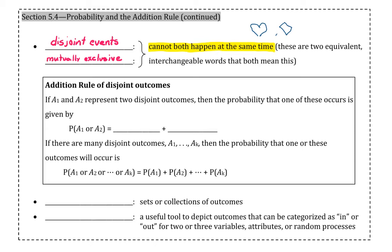When it comes to probability, we will often use the addition rule. For disjoint outcomes, if A1 and A2 represent two disjoint outcomes, then the probability that one of these will occur is given by P(A1 or A2). To calculate this probability, we compute the probability of A1 individually plus the probability of A2 individually. If there are many disjoint outcomes, then the probability that one of these occurs equals P(A1) + P(A2) + P(A3), and so forth.